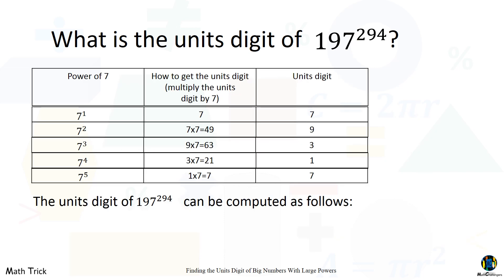The unit's digit of 197 raised to the power of 294 can be computed using this cyclicity concept.